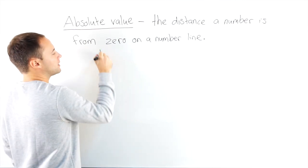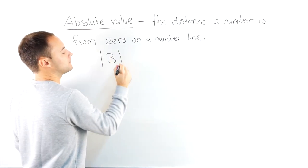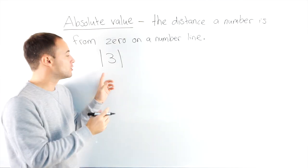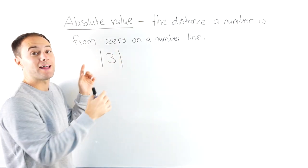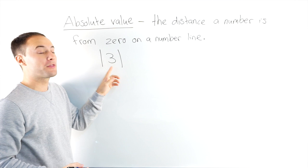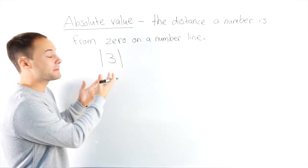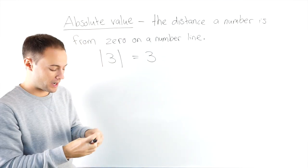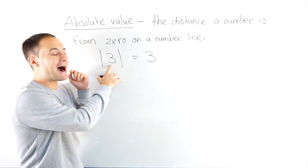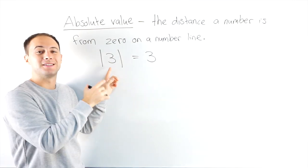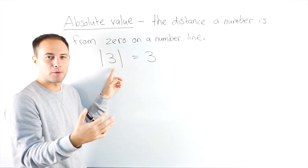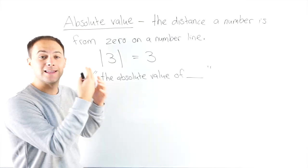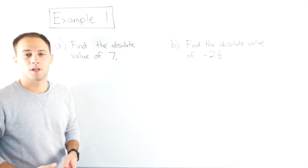For example, these two lines mean the absolute value of three. The absolute value of three is three. You can think about it: how far away from zero is three on a number line? Well, it's three away. Let's get into our first example.